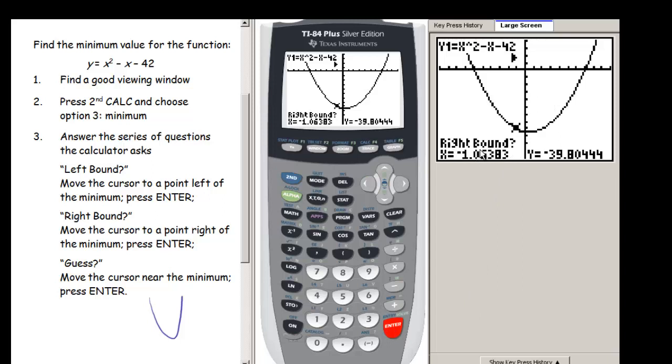Now it's going to ask me a different question. Also notice up here a little arrow appeared. So this is the left side of my interval that I'm telling it. So it asks me for a right bound. So I'm going to move my cursor, my spider, so that I'm to the right of my minimum. So I'm definitely to the right over here. And then I press enter again.